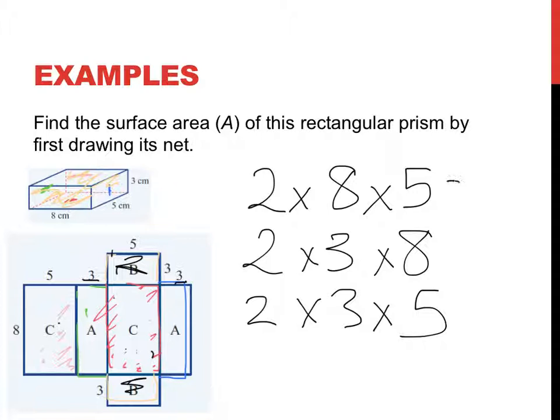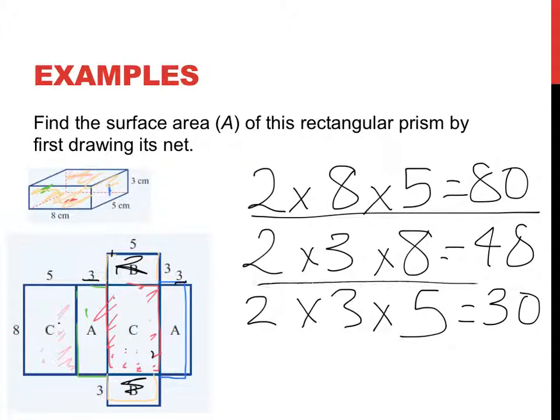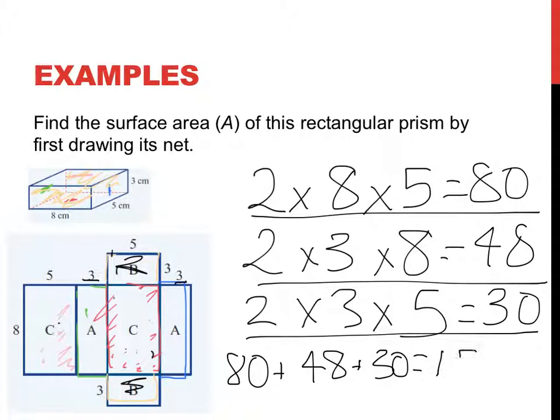Okay so two times eight times five, two times three times eight and two times three times five, otherwise known as 80, and then the answer for this one is 48, and then six fives are 30. Okay so the cumulative total, the surface area for these guys is 80, these guys is 48 and these guys is 30, so my grand total is 80 plus 48 plus 30 which gives me 158. If I give my answer like that I'm not going to be correct. Okay remember it's surface area, my original measurement was in centimeters so I'm going to give my answer in centimeters squared.